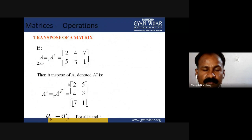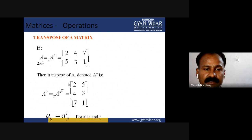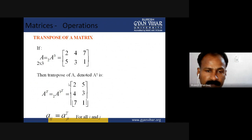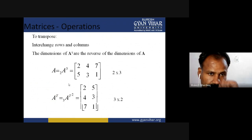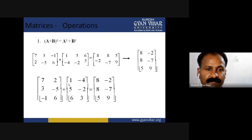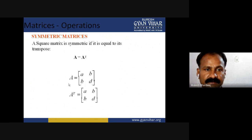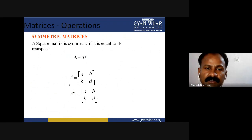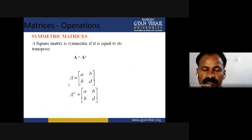Now, the transpose of matrix — we had already covered this topic. Transpose of matrix is where we are changing the row into the column and a column into the row. These are some properties of the transpose matrix, and these are some questions related to the transpose of matrix.